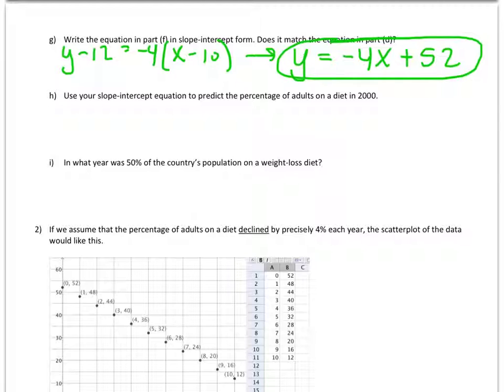All right, so now I'm going to use that slope-intercept equation to predict the percentage of adults on a diet in the year 2000. So the year 2000 is 13 years after 1987. Okay, so I'm going to replace my x with a 13. And 13 times 4 is 52. So I have negative 52 plus 52, which is 0. Okay, so 0% of the adults in this country were on a diet in the year 2000.